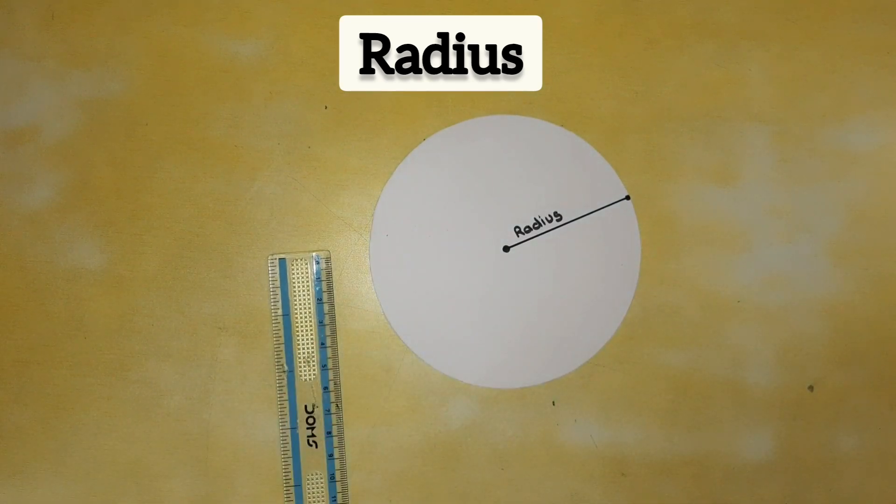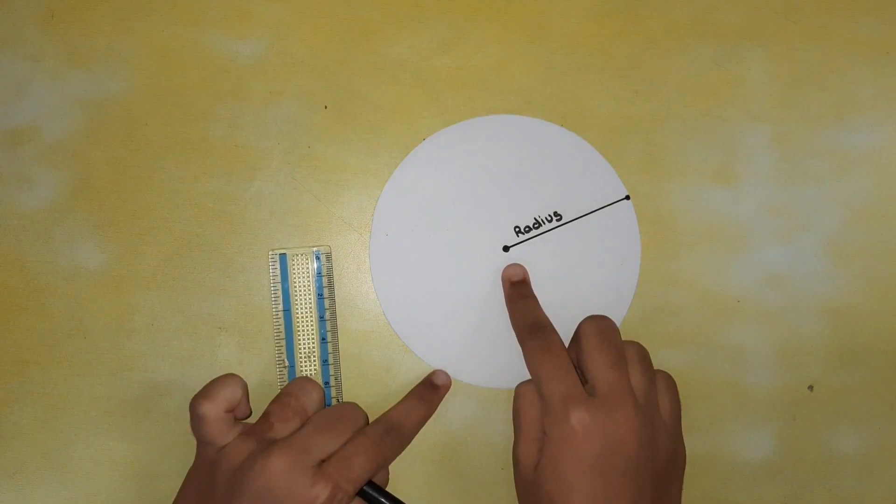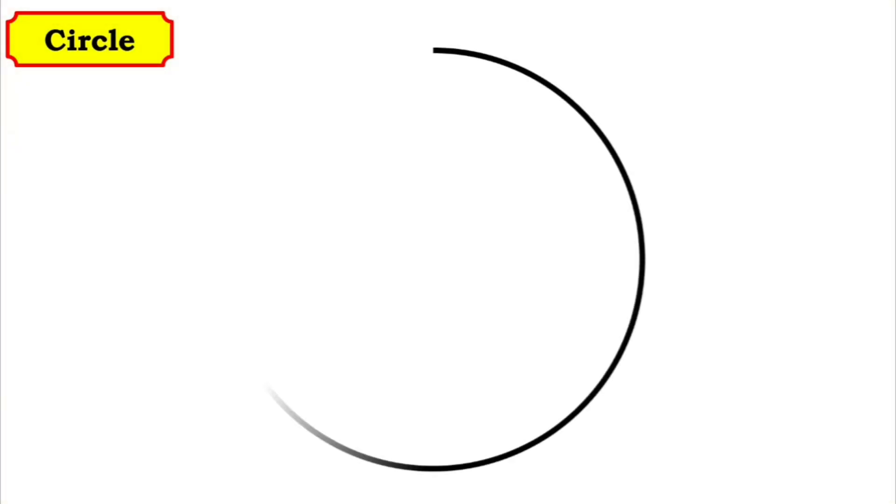Children, radius is half of the diameter. So this is a circle. We have learned a center point of a circle.